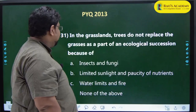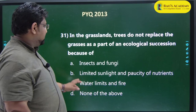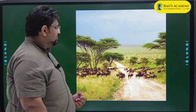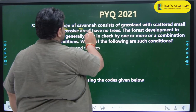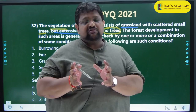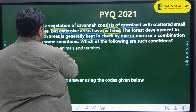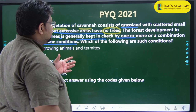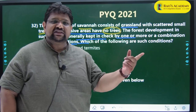Anyone who had done previous year question analysis would have studied all these aspects. Now look at this question from 2021 prelims: 'The vegetation of savannah consists of grassland with scattered small trees, but extensive areas have no trees. Forest development in such areas is generally kept in check by one or more conditions.' They are asking the exact same thing as 2013 prelims - a repetition in 2021.